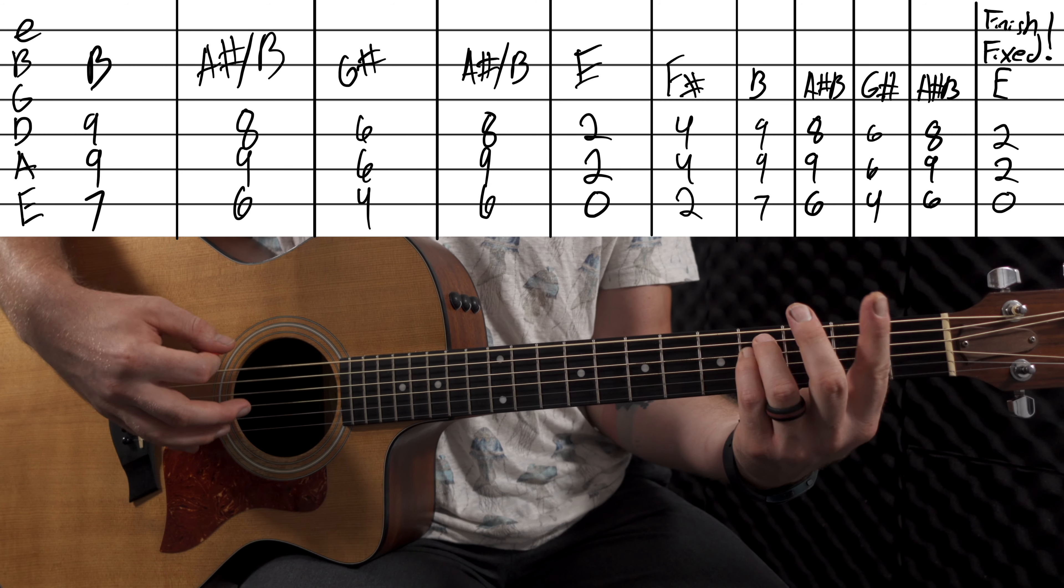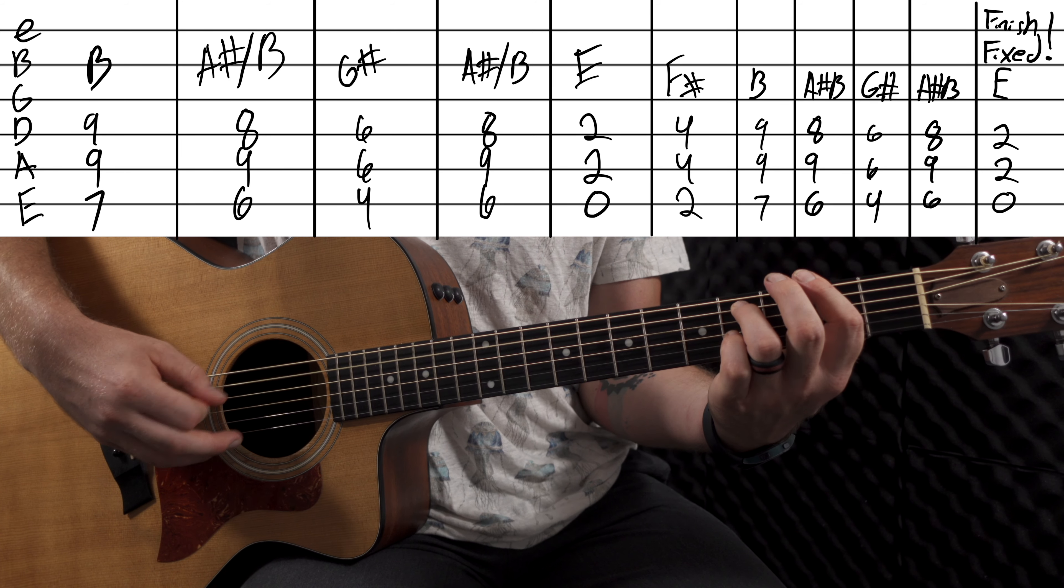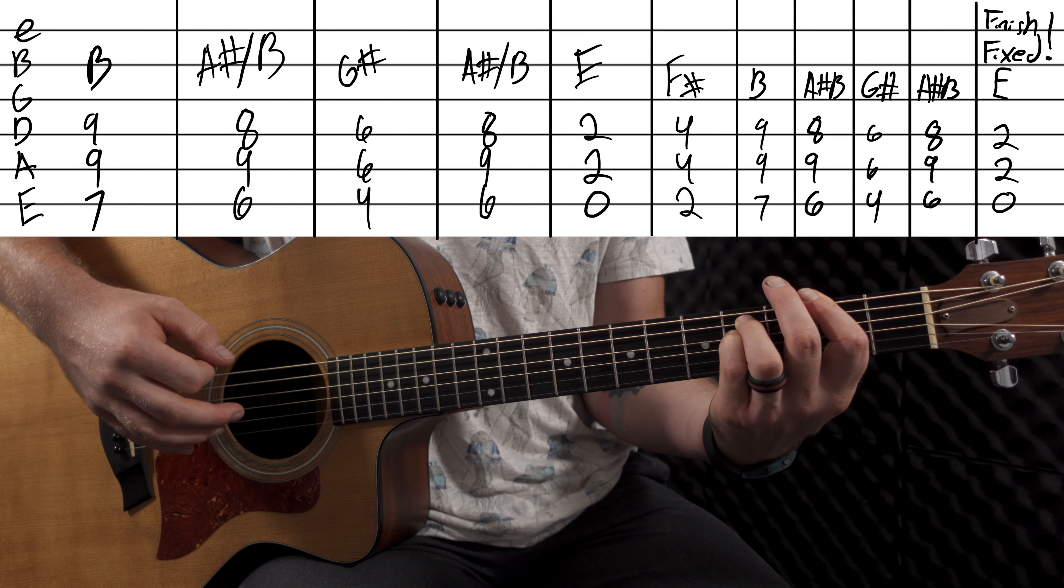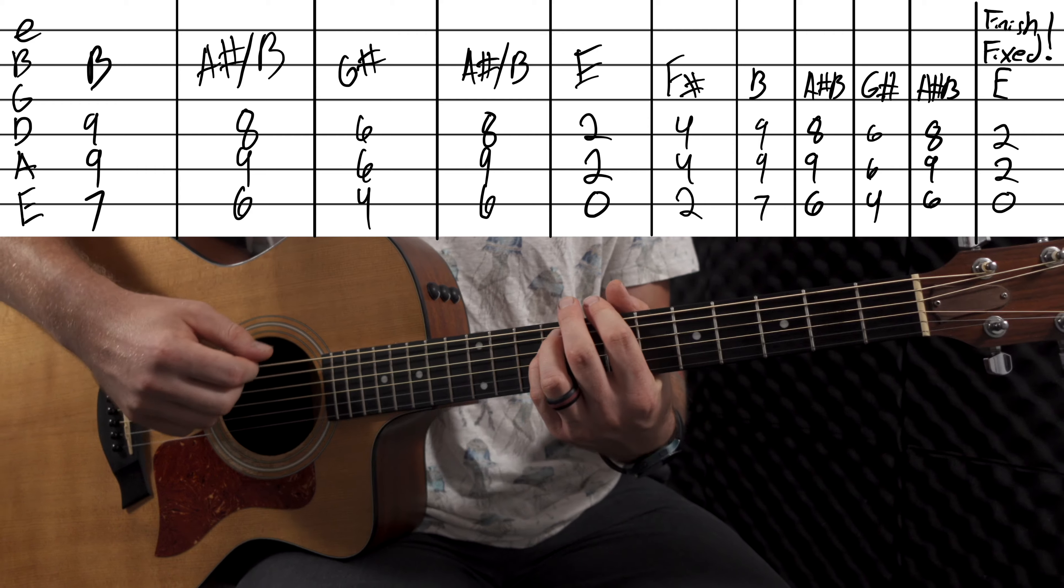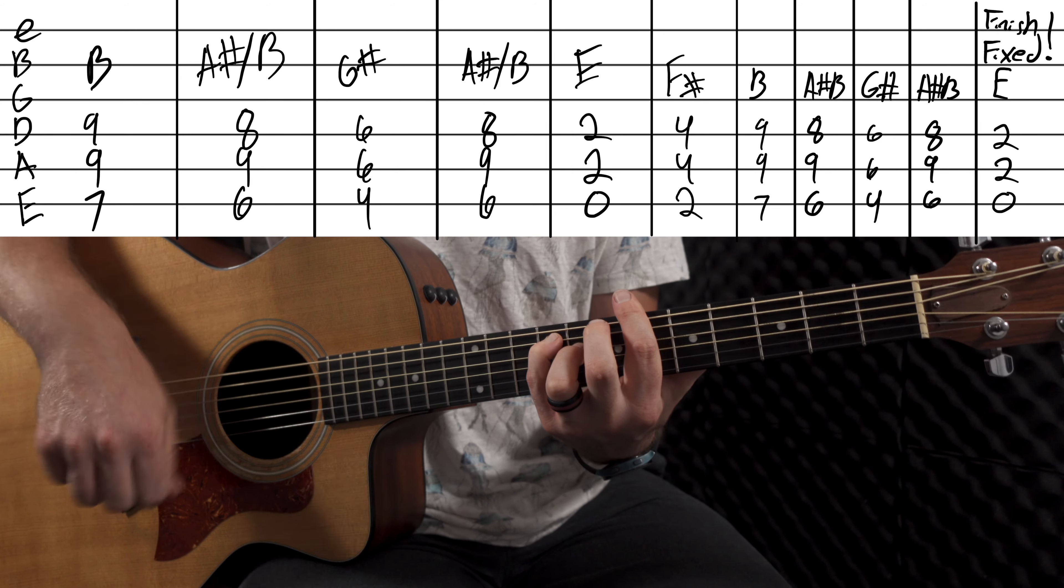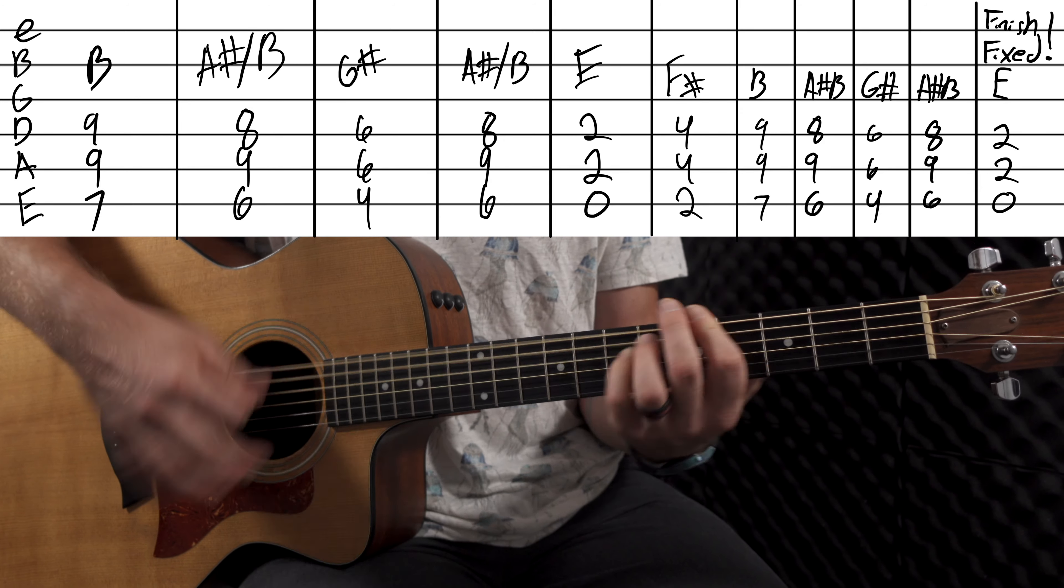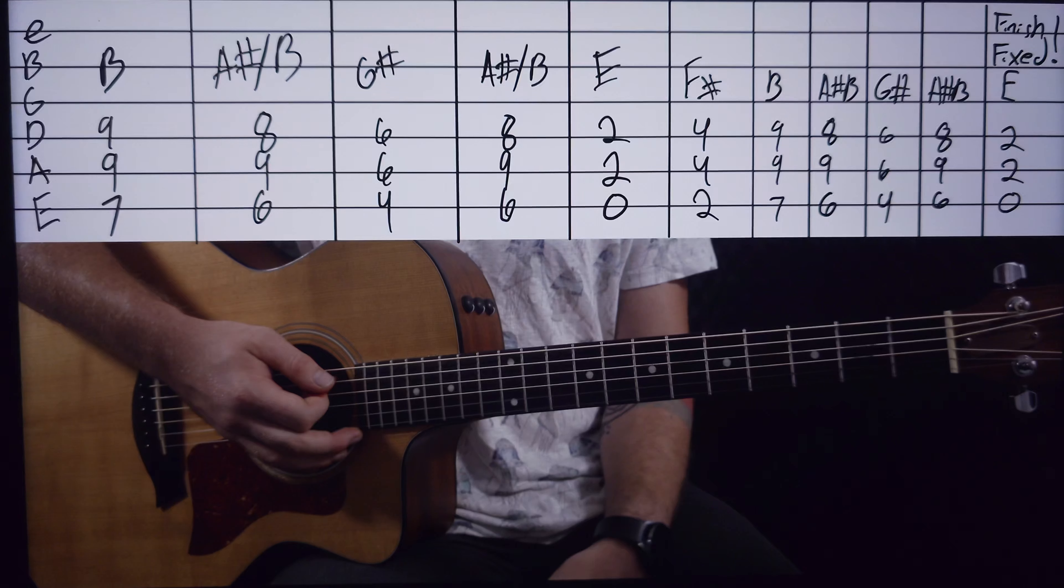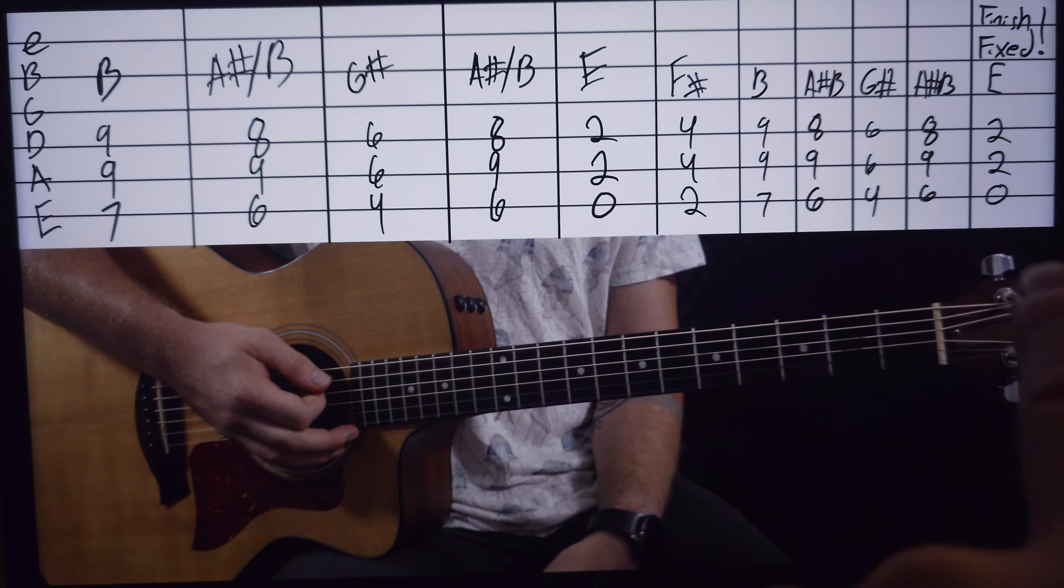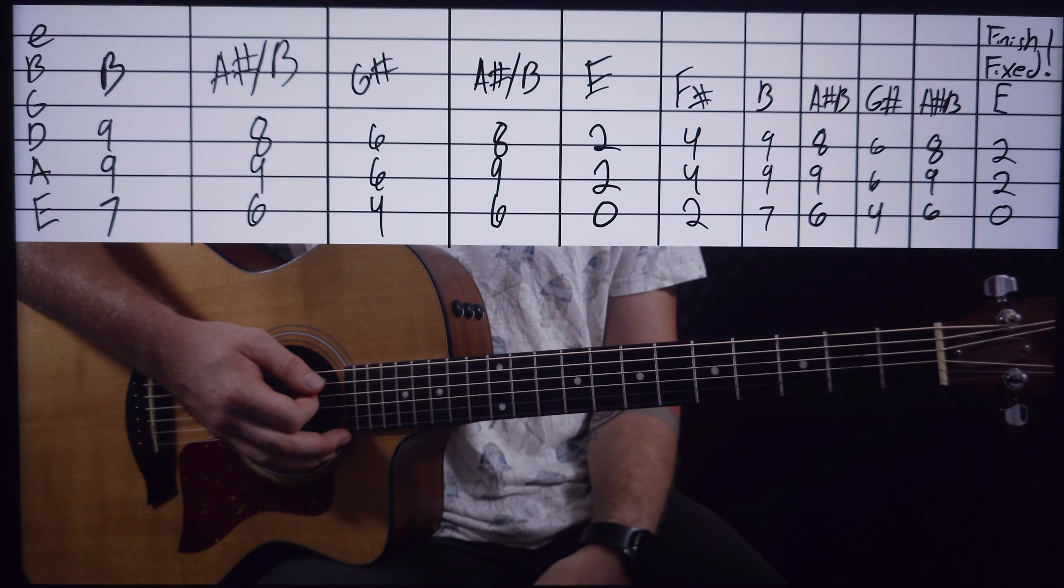And then I'll go to F sharp, which is 2nd fret on the E string, 4th fret on the A string, and 4th fret on the D string. And then it goes back to the B minor again. Then it goes to A sharp B minor. Then it goes back down to the G sharp. So he actually doesn't stop there. I made a mistake, guys, so I figured I'd add this in the video, but I fixed it right here. He actually plays E. My bad.